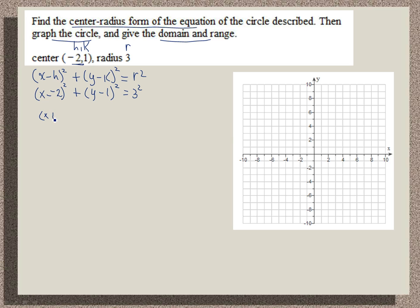Or x plus 2 squared plus y minus 1 squared is equal to 9. That's my center radius form of the circle.